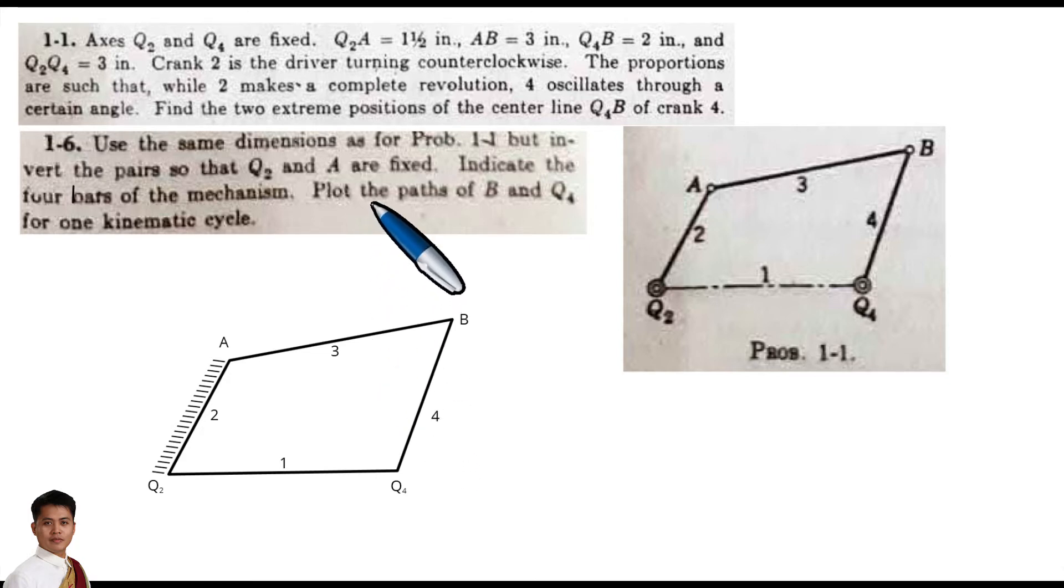There is no statement in the problem about the driver or the driven, but usually in a given mechanism, the driver is usually the shorter. But in here, crank 3 and crank 1, they have the same dimension. So we can just simply use crank 1 as the driver or the crank 3.